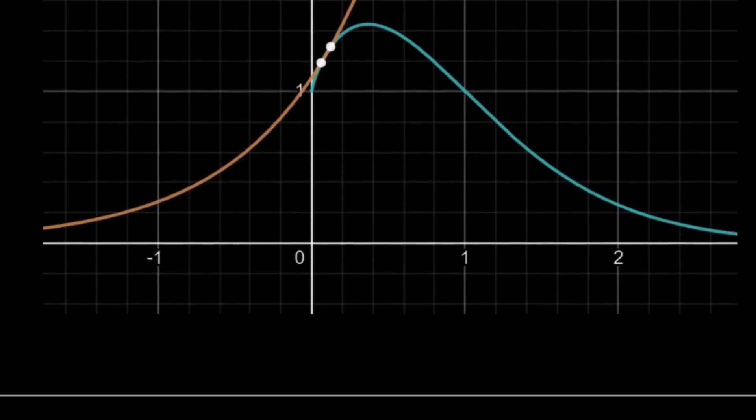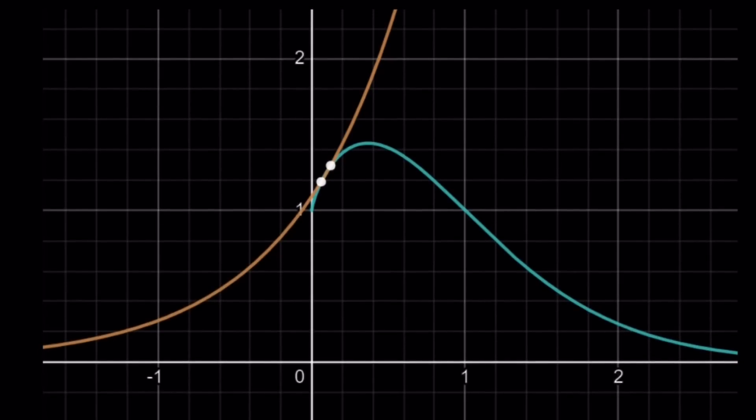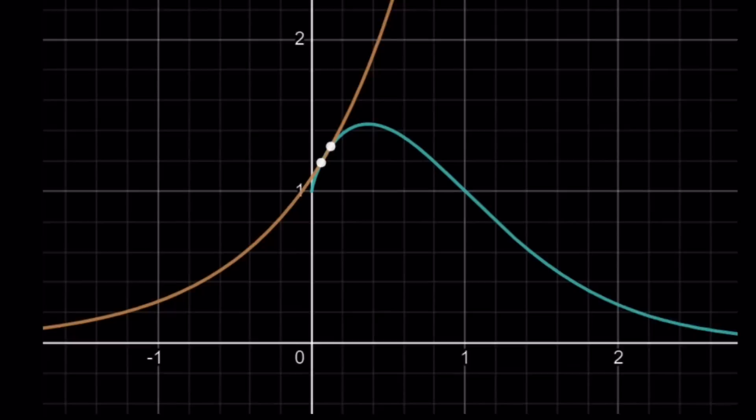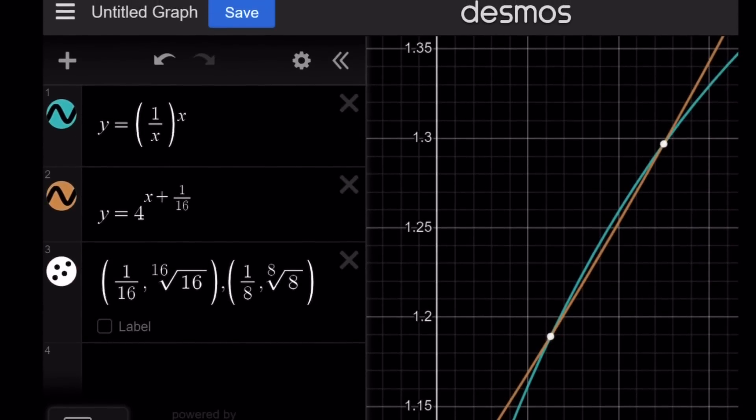So here's the graph of two functions. First of all, I made a graph like this, but notice that there are two intersection points. You don't see the points, but I'll show you on the next graph. Here we go. I graph one over x to the power x and four to the power x plus one over 16.